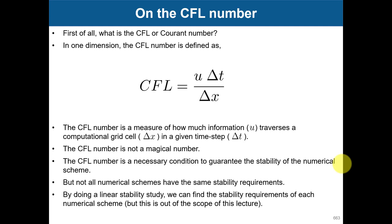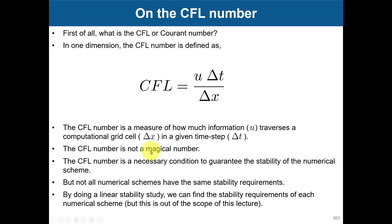The CFL number is defined like this. It's a ratio — a non-dimensional number. It's the ratio between the time step, the mesh size, and a characteristic velocity. So it's very important. In CFD, it's not a magical number. This CFL number defines the condition to warranty stability of numerical schemes.